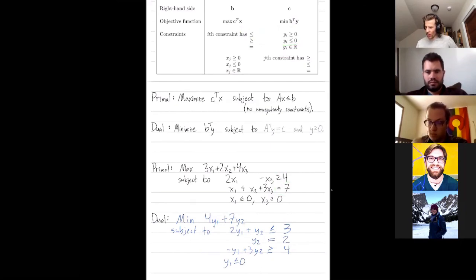I mean, yeah, a priori y2 is unbounded, but then you can solve for it there.